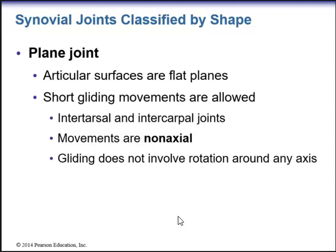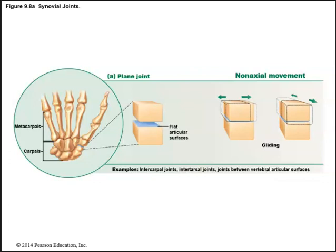Synovial joints are classified by shape. The first type is a plane joint, which has flat articular surfaces allowing short gliding movements. Movements are non-axial, meaning gliding does not involve rotation around any axis. Examples include intertarsal joints, intercarpal joints, and joints between vertebral articular surfaces.